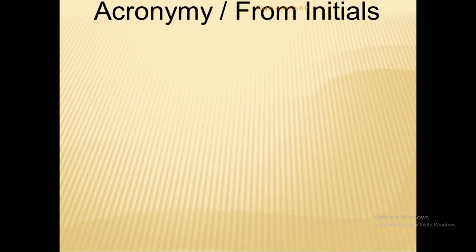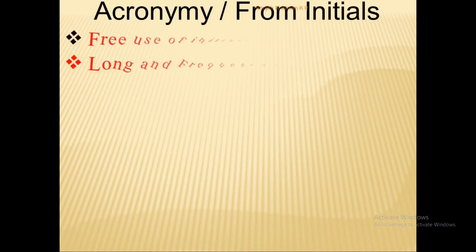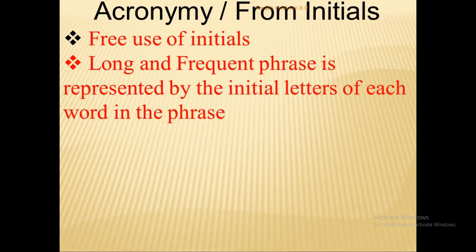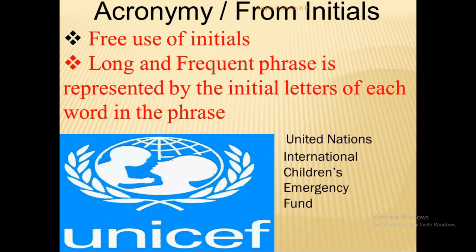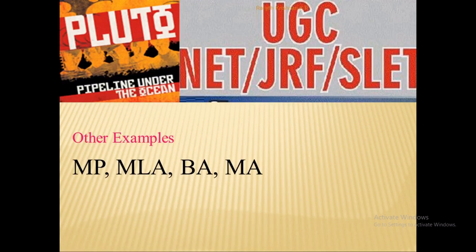The fourth process of word formation is the acronym — words formed from initials. A long and frequently used phrase is represented by the initial letters of each word. For example, UNICEF is the short form of United Nations International Children's Emergency Fund. Other examples include UGC (University Grants Commission), NET (National Eligibility Test), JRF (Junior Research Fellowship), SLET (State Level Eligibility Test), as well as MP, MLA, BA, MA, etc.